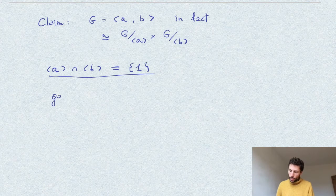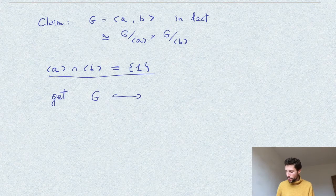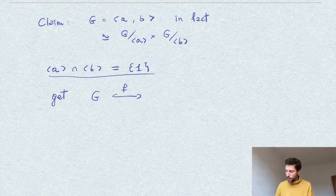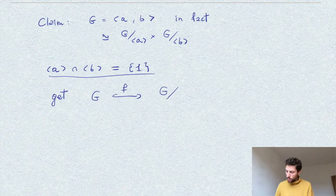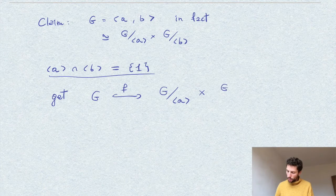then we always have an injection, so an injective morphism of groups, say F, from G to the product of the quotients of these two.